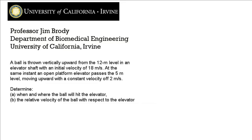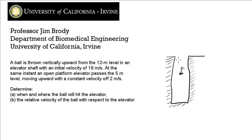Here's today's problem: a ball is thrown vertically upward from the 12-meter level in an elevator shaft with an initial velocity of 18 meters per second. At the same instant, an open platform elevator passes the 5-meter level moving upward with a constant velocity of 2 meters per second. Determine first when and where the ball will hit the elevator, and second the relative velocity of the ball with respect to the elevator.